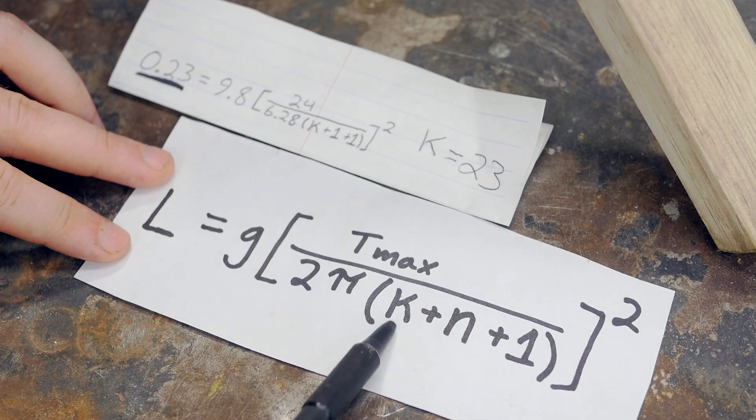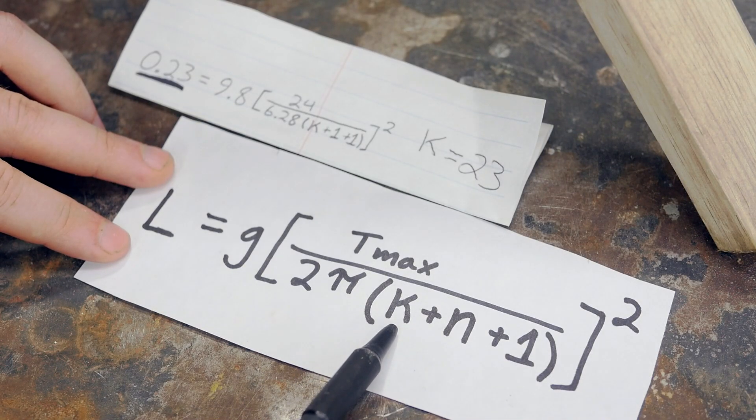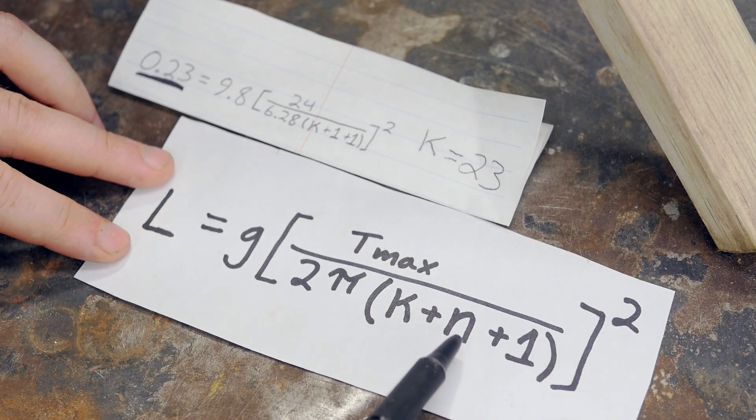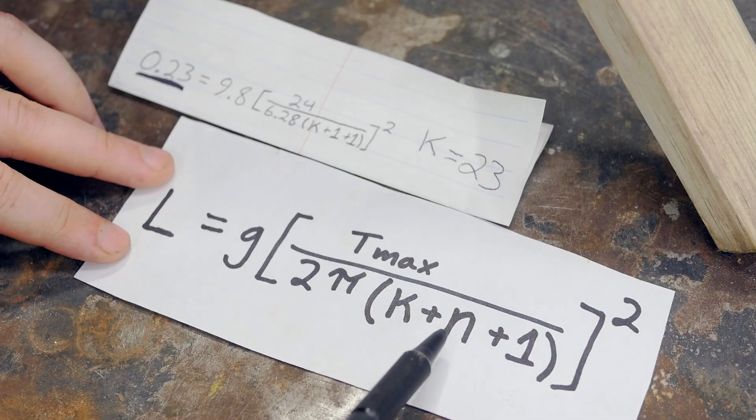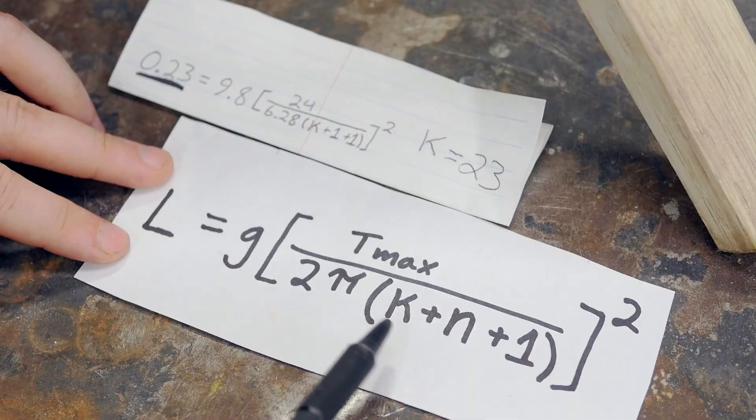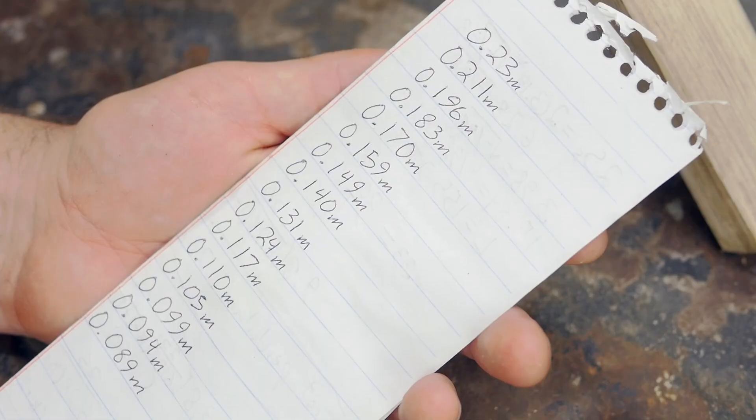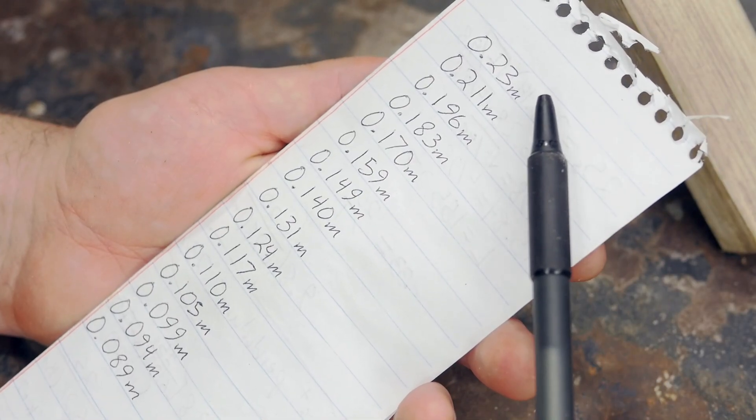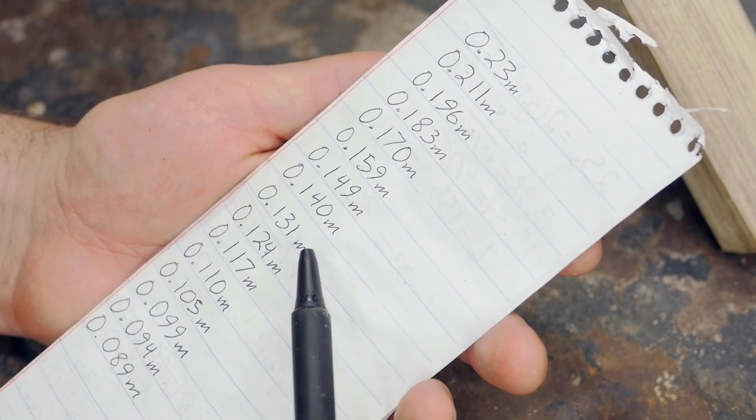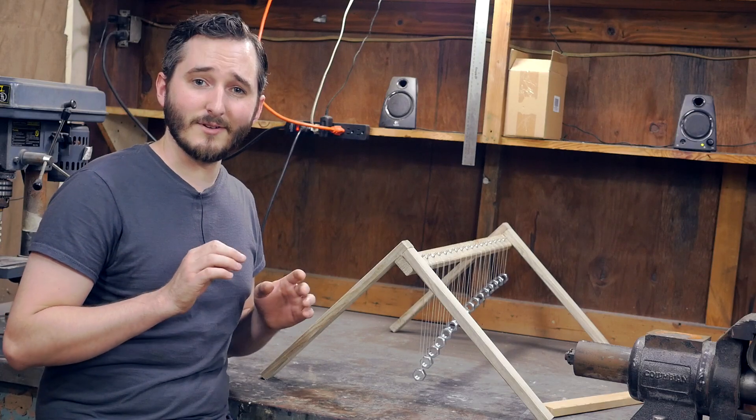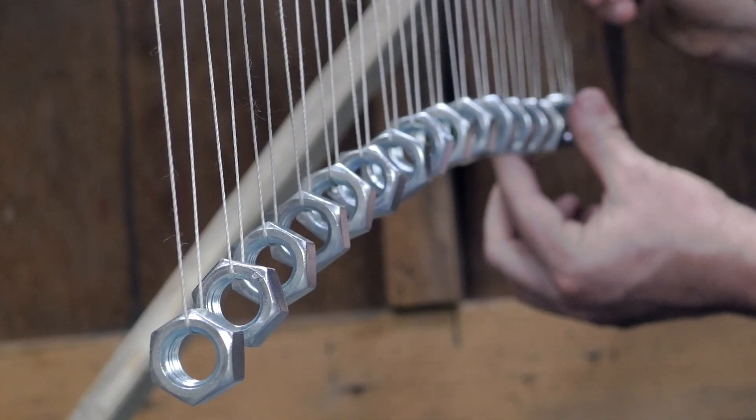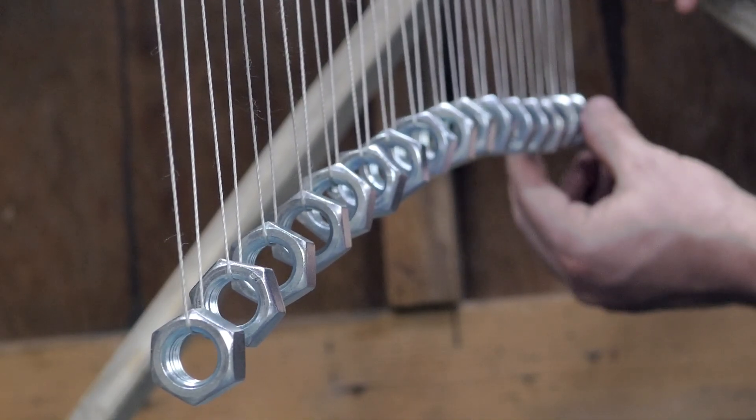So now that I know in my case that K equals 23, I have a number to input for every variable on this half of the equation. And by replacing N with all the numbers 2 through 16, I can solve L, the length, of each of those individual pendulums. And so assuming a starting length of 0.23 meters, these are the outputted numbers for all the lengths of my various pendulums down the line. So you can see that this works out to be a very slight curve, though I'm not surprised I assumed it was linear just from looking at it in videos without a description.